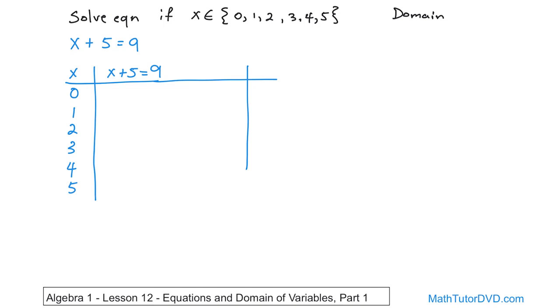What if we put the number 0 in for x? x can be 0, right? So 0 plus 5, I'm going to put equal with a question mark 9. And you have to ask yourself, is 0 plus 5 equal to 9? Well, 0 plus 5 would be 5 equal question mark 9? No. So that value of x does not work. It doesn't satisfy this equation. What if we put the number 1 in? 1 plus 5 equals question mark 9? Well, 1 plus 5 is 6 equal question mark 9? No.